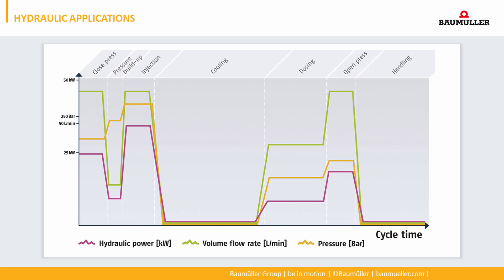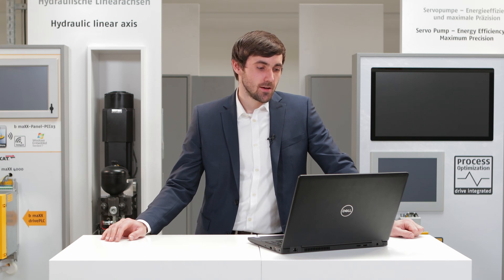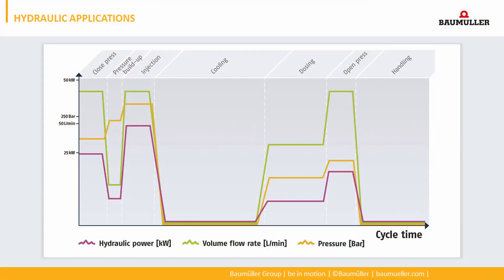The segment pressure build-up needs higher pressure and less flow rate, so the power is lower. The injection needs high pressure and high flow rate, so it's the segment with the highest power. In the cooling period there's no hydraulic power required. In the dosing and opening of the press, medium power is required. At the end of the cycle, during handling, there's also no hydraulic power requested.